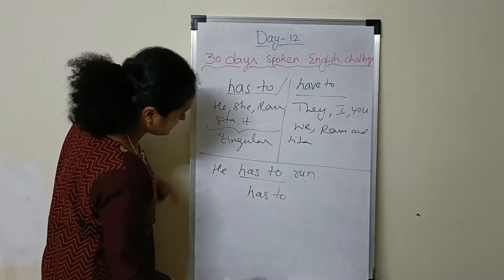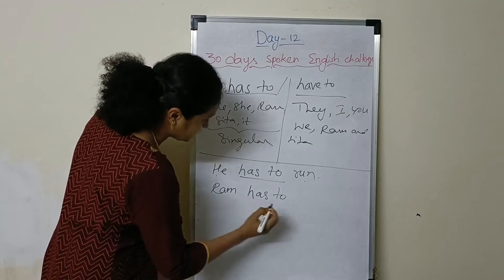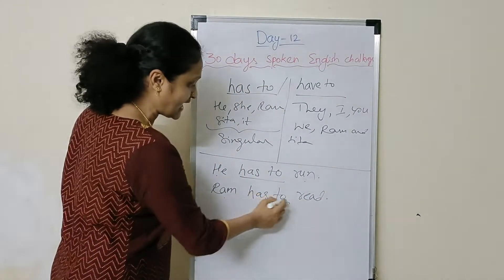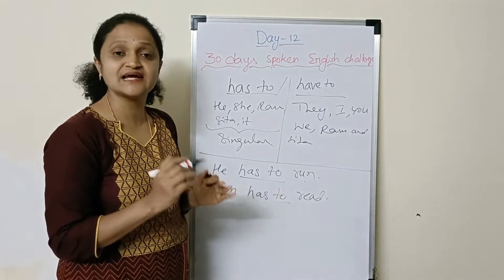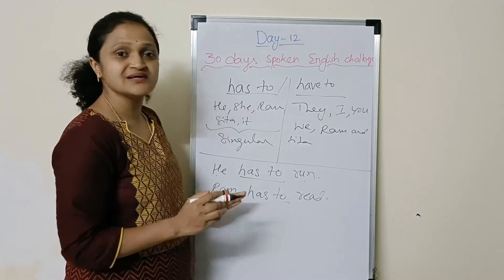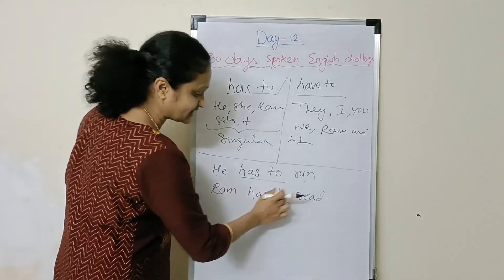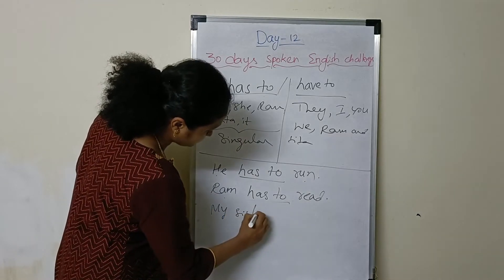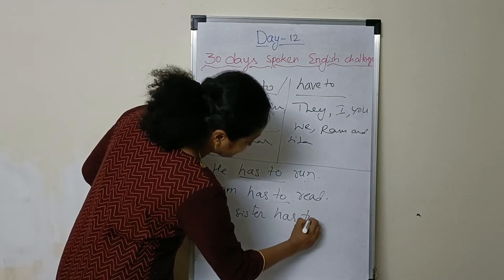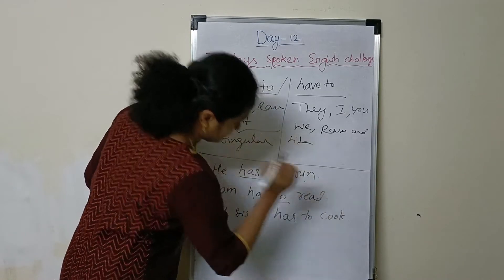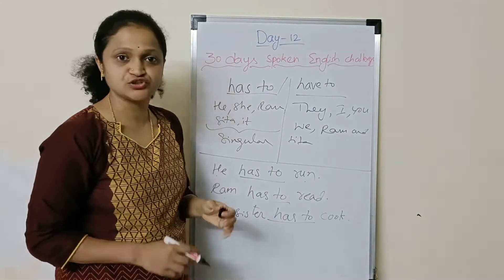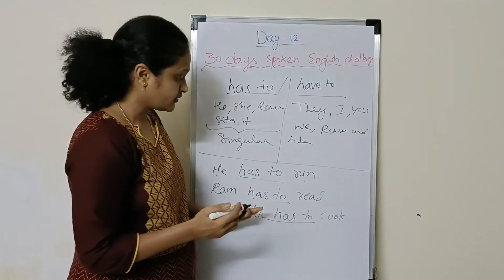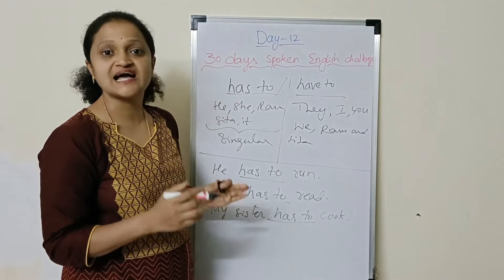Instead of 'he,' we use Ram here: Ram has to read. Ram is a singular subject, so we use 'has to.' Ram has to read — it's like a necessity. Next example: My sister has to cook. Sister is singular, so 'has to' — it's the sister's obligation to cook.